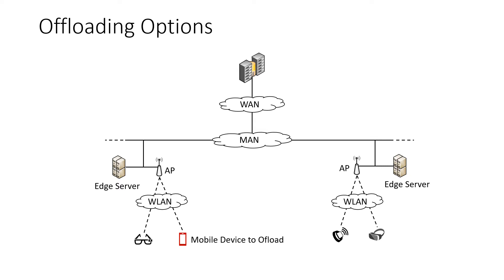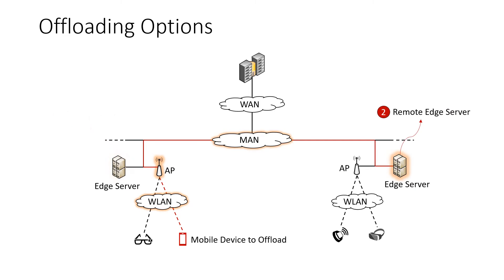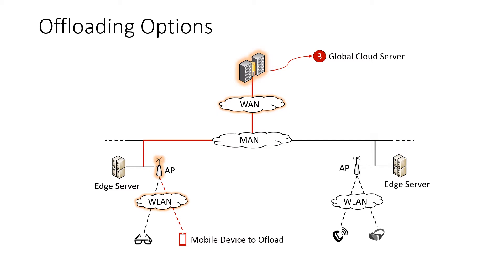So what are the options for the target processing unit? We have three options for the case study. The first option is offloading to the nearest edge server, which we call the local edge server. In this case, the mobile device can access the target server with one hop. The second option is offloading to another edge server connected to the metropolitan area network. In this case, we access the edge server with two hops over WLAN and MAN. The third option is offloading to the cloud server. In this case, we access the target server with three hops over WLAN,